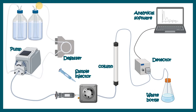The mobile phase moves through sturdy tubing that can withstand high pressure. Via the degasser it passes through the pump, where dissolved gases are removed. The pump moves the liquid to the sample injector, where the mobile phase mixes with the injected sample. This mixture then moves through the column and ultimately reaches the detector, where the analytes are detected.